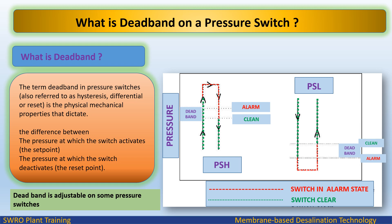What is dead band on a pressure switch? The term dead band in pressure switches — also referred to as hysteresis, differential, or reset — is the physical mechanical property that dictates the difference between the pressure at which the switch activates (the set point) and the pressure at which the switch deactivates (the reset point). Dead band is adjustable on some pressure switches.